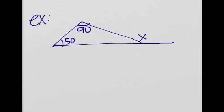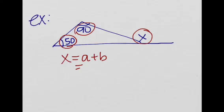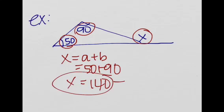Okay, so let's look at an example. So we are to find x, given the angles 50 and 90. So we know that x is equal to a plus b, and we realize that 50 is equal to a and 90 is equal to b, or vice versa. So x is equal to 140 degrees. Great, nice and easy.